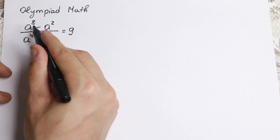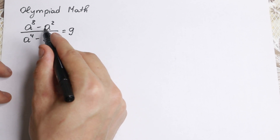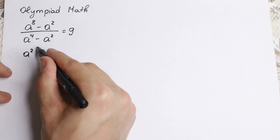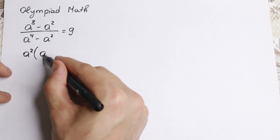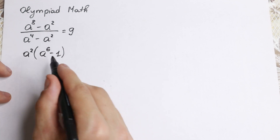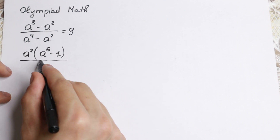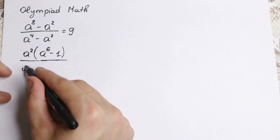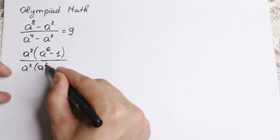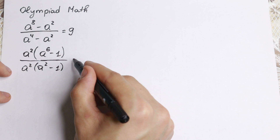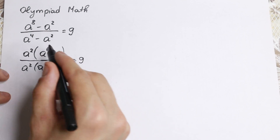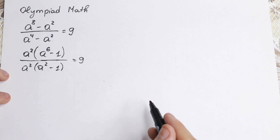First, we have the numerator a to the eighth minus a squared. We can easily factor out a squared. If we factor a squared from this, we will have a to the sixth power minus 1. We just factored out one a squared. We can do the same with our denominator — factor out a squared as well — so we'll have a squared minus 1. I hope you understand this step.